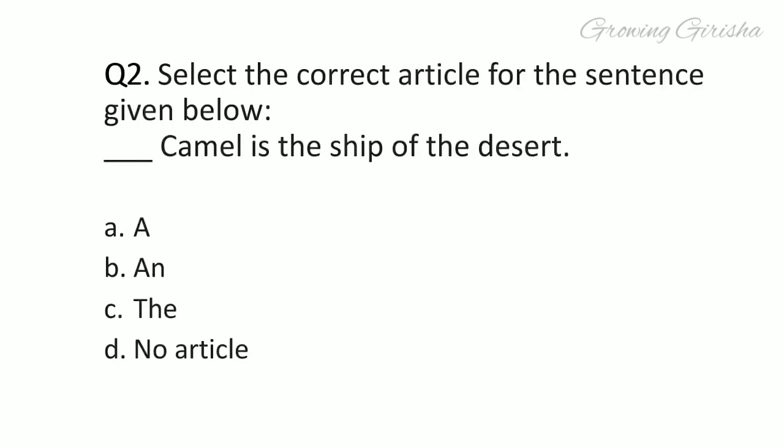Question 2: Select the correct article for the sentence given below. 'Dash, camel is the ship of the desert.' Answer is option D: No article.